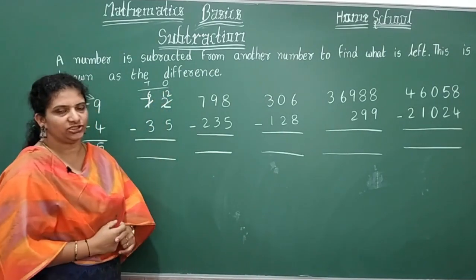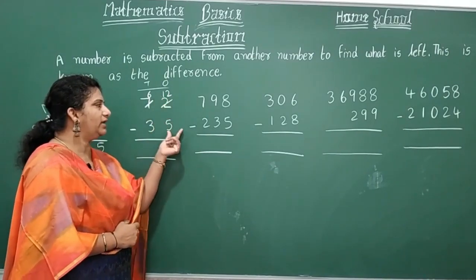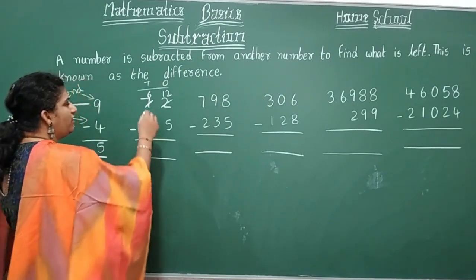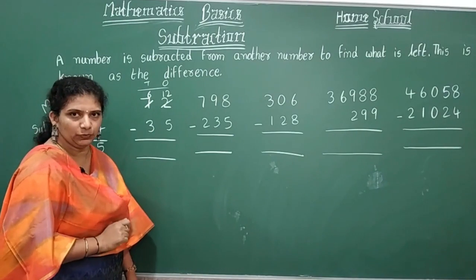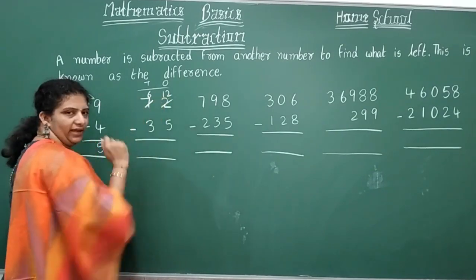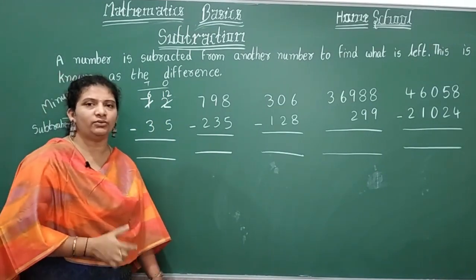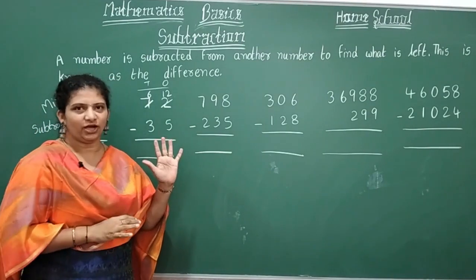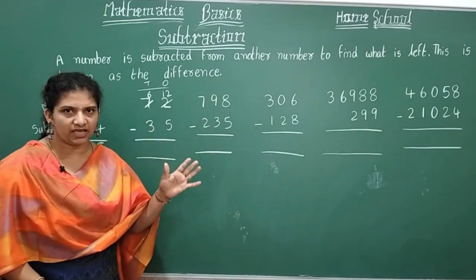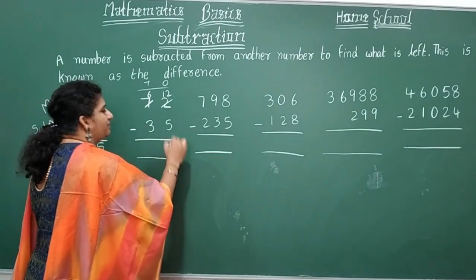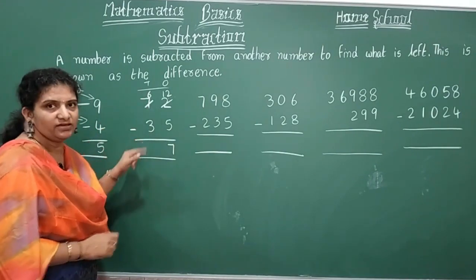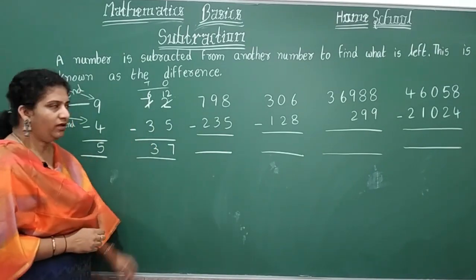Now subtract 35 from 72. In the ones place: twelve minus five equals seven. In the tens place: six minus three equals three. So the difference is 37. Remember, when you borrow, reduce the tens digit by one and add ten to the ones digit.